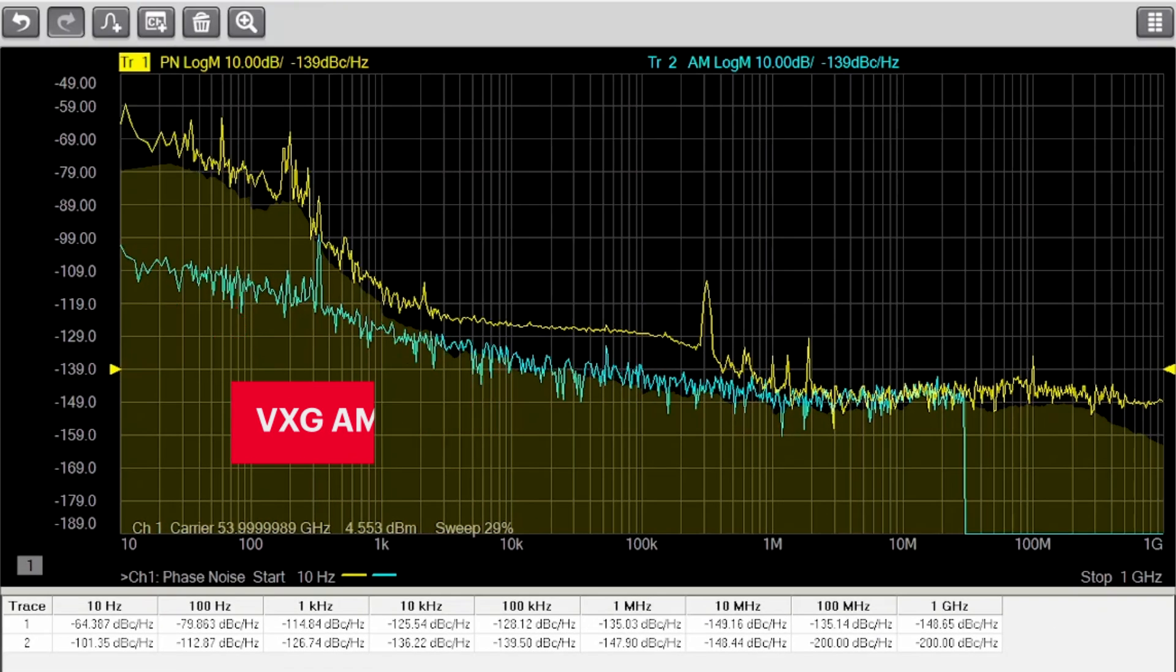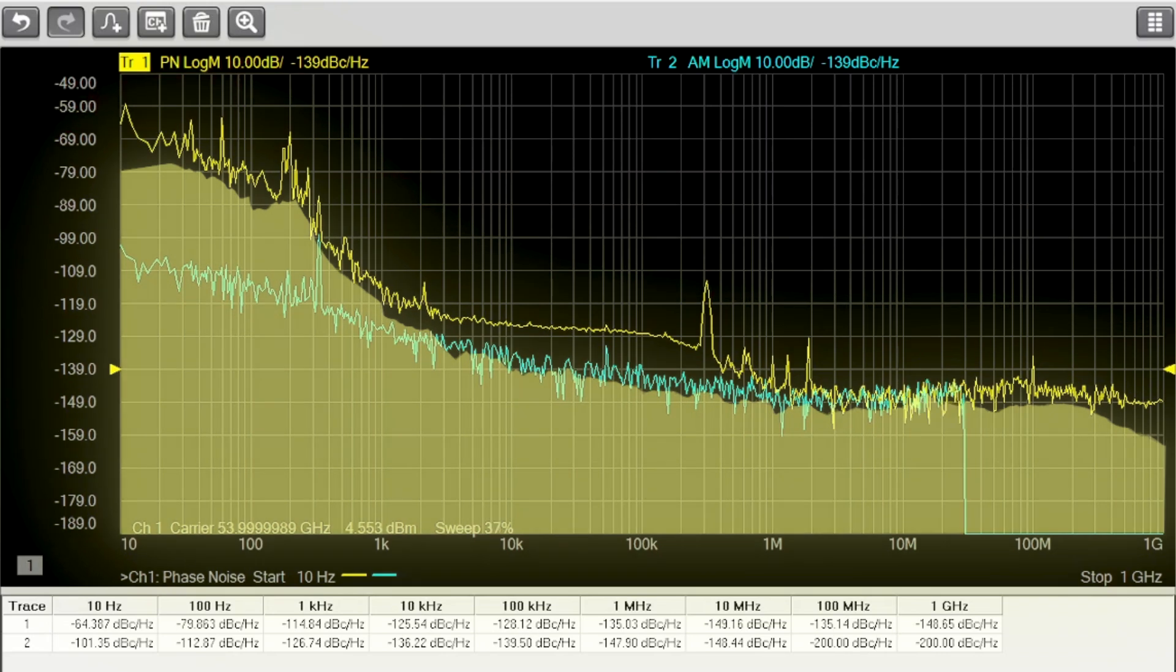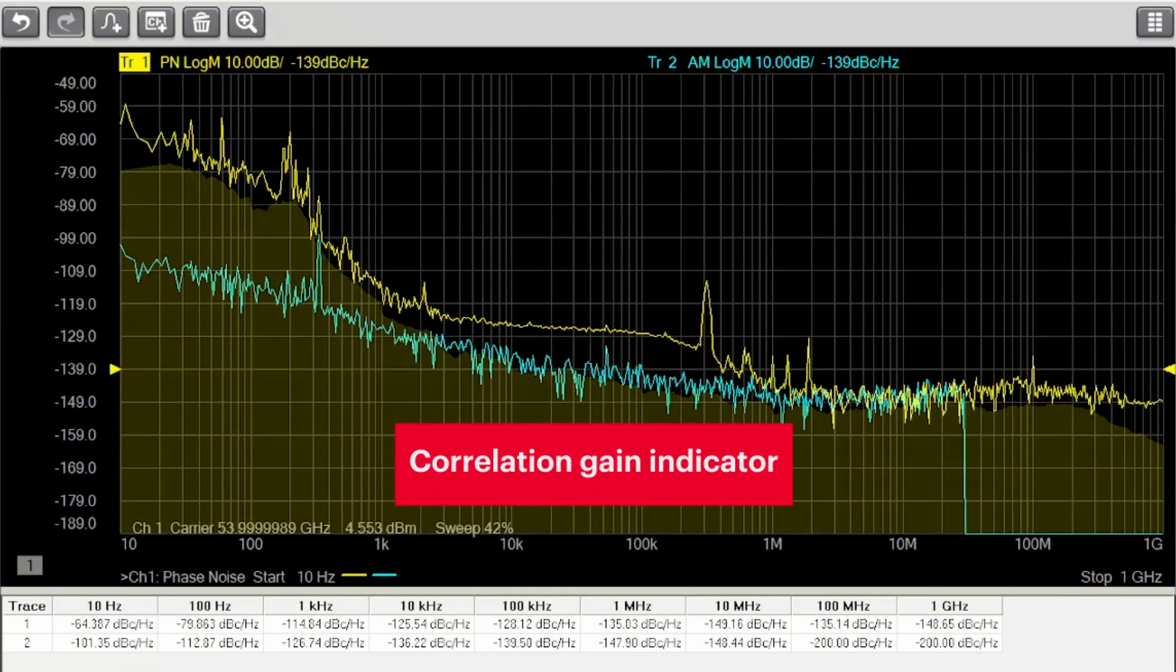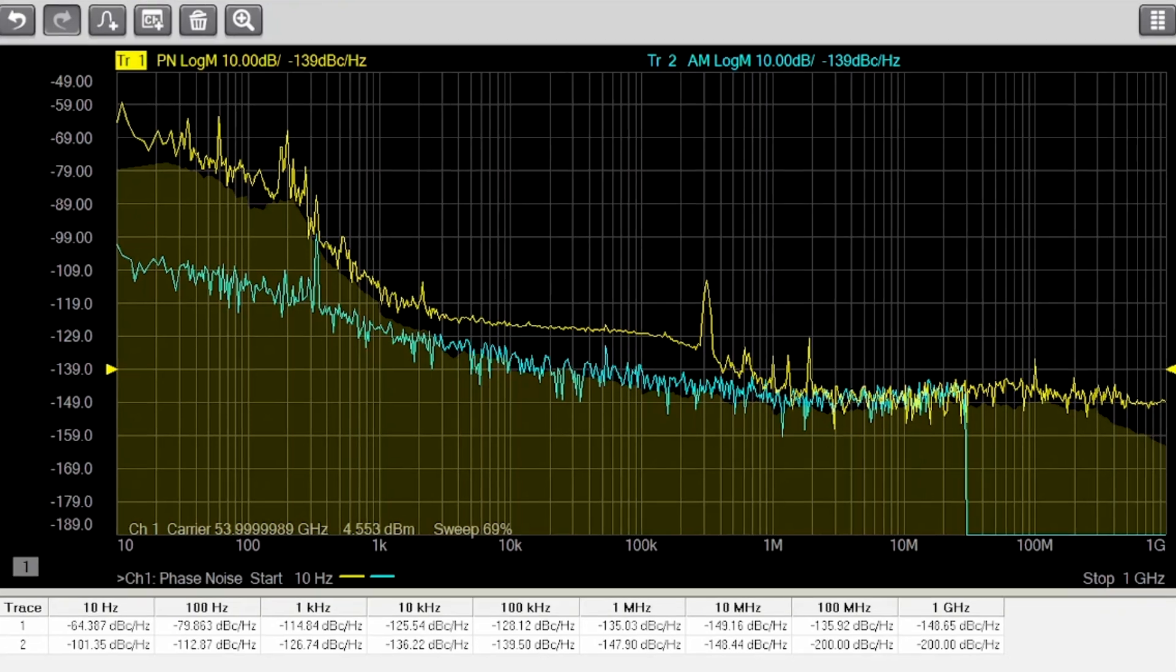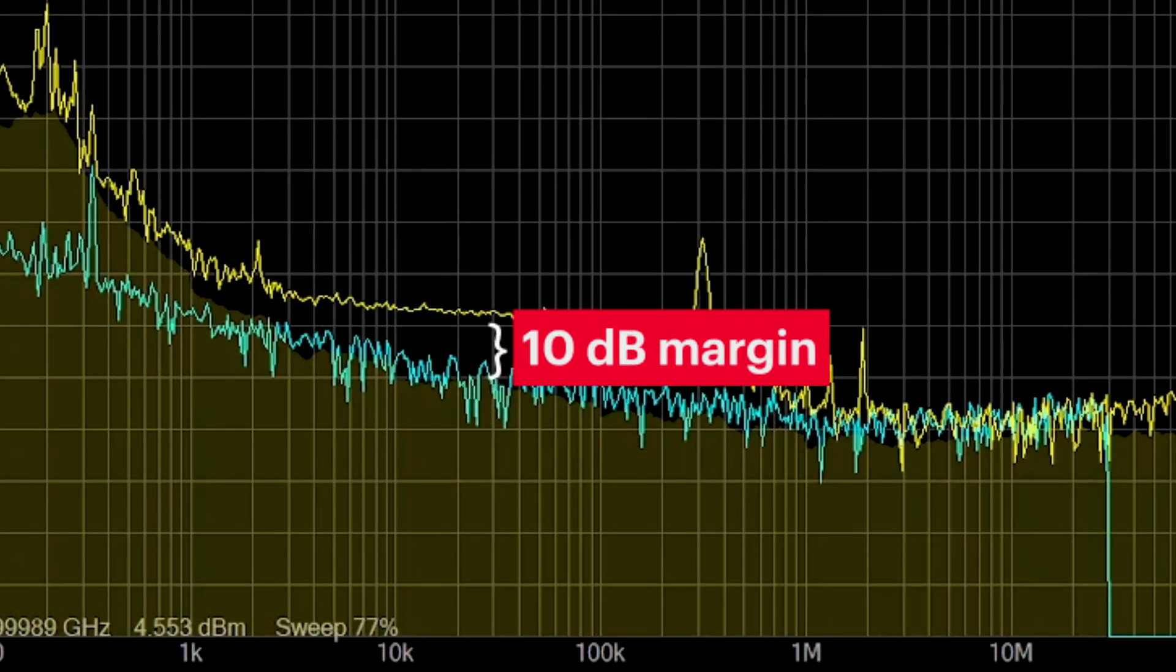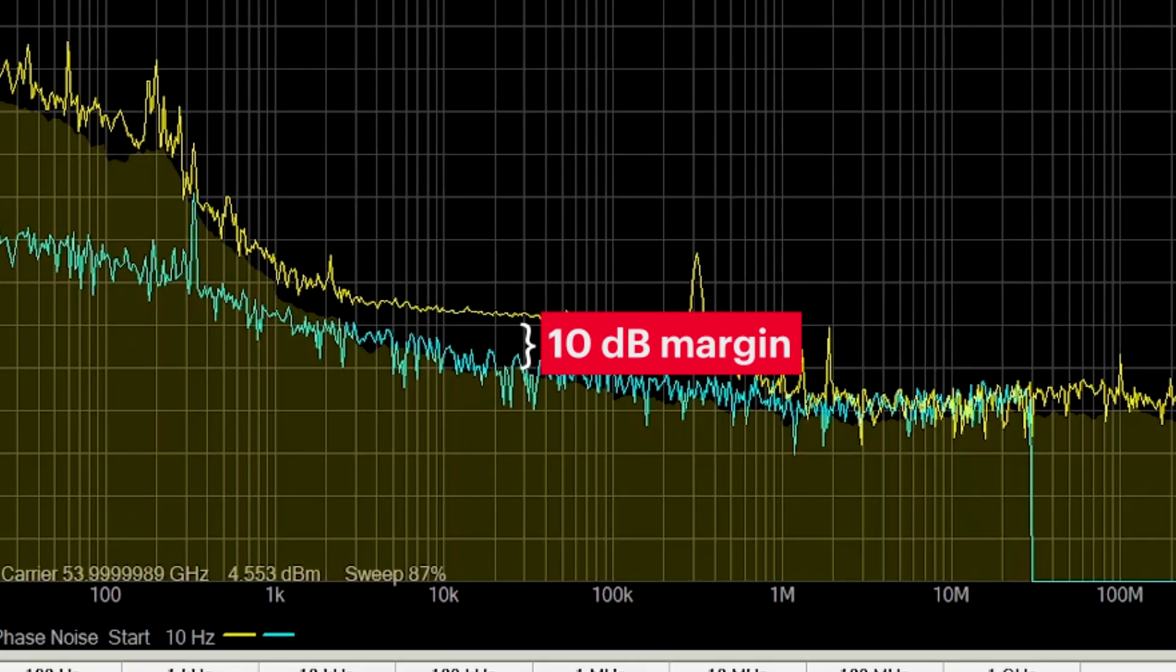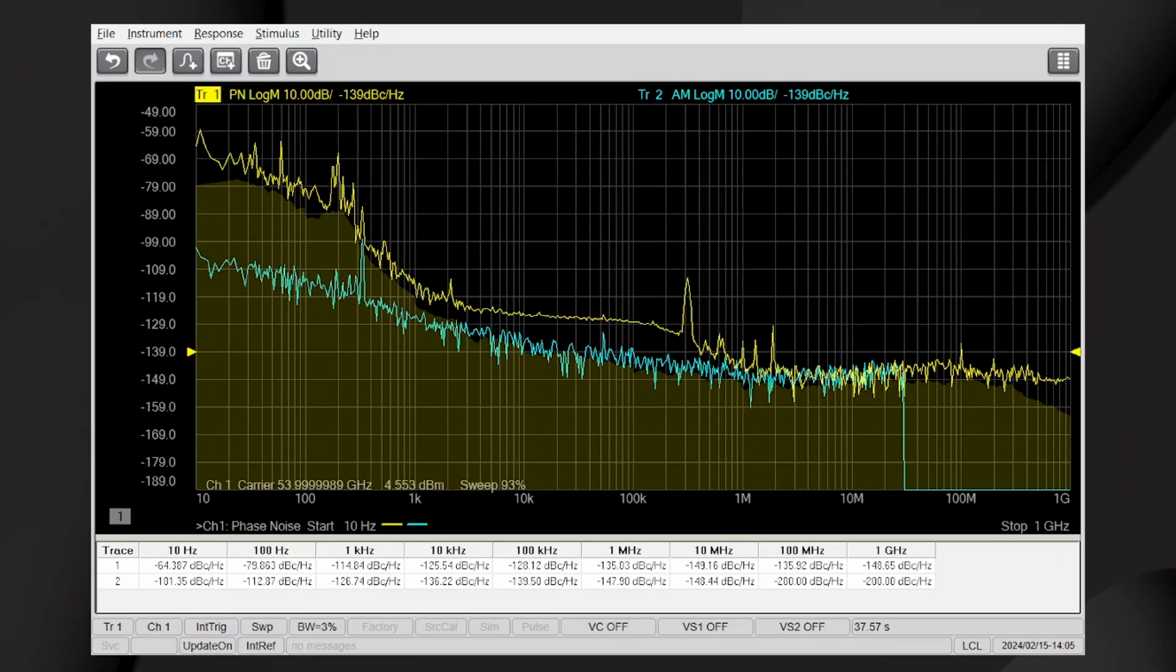Below the trace, we can see a translucent shaded area that we call the correlation gain indicator. The correlation gain indicator shows us the improvement in measurement system sensitivity that we get from a given amount of correlations. Ideally, we would have 10 dB of margin between the solid yellow trace and the correlation gain indicator area to ensure that we are measuring the VXG's actual phase noise.